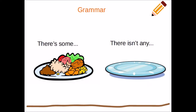We're going to be using 'there's some' and 'there isn't any.' Our vocabulary words for this unit are food — things like chicken, rice, salad, milk, cake, water, ice cream. When we have one or two or three or four or five or six or a lot of pieces, then we would use 'there's some.' When there isn't any, well that would be zero.